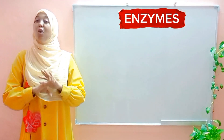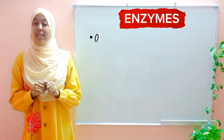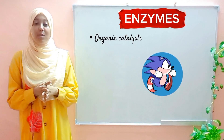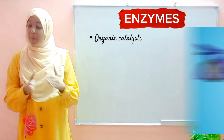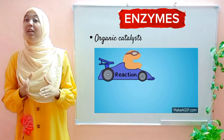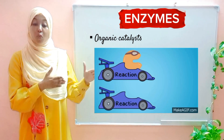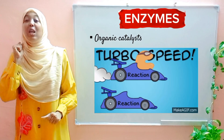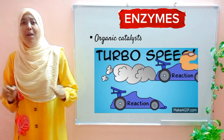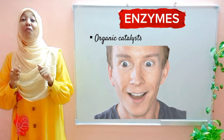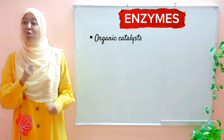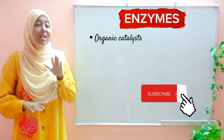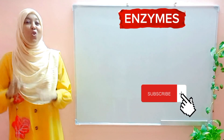Enzymes are organic catalysts — they speed up the rate of reactions within organisms. In the presence of an enzyme, a particular reaction can occur within a range of 1,000 up to 1 billion times faster than without an enzyme. If you find this intriguing, stay tuned to the end of the lesson where we will be discussing factors that affect enzyme-controlled reactions.